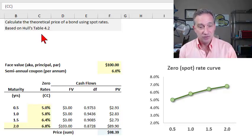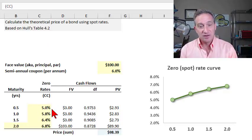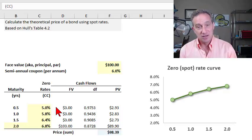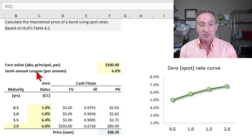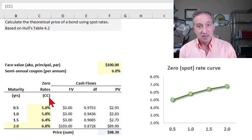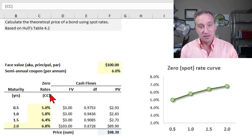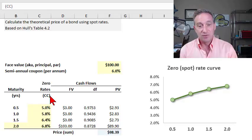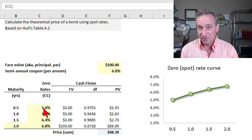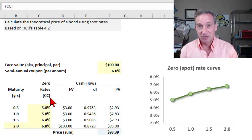I'm following Hull's Table 4.2, so this is five percent per annum with continuous compounding. As I've mentioned in previous videos, the interest rate compound frequency is a key ingredient. If we're not told that, if we're just told five percent, we don't have enough information. We need to know five percent with continuous compounding or whatever is the compound frequency.